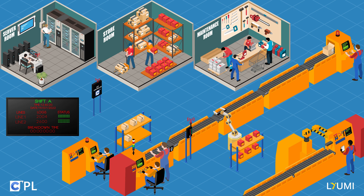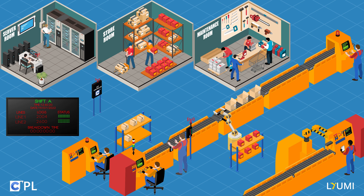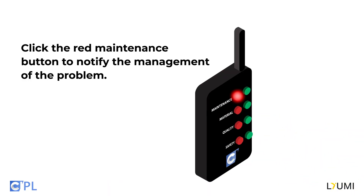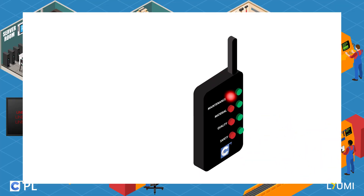Suddenly, a breakdown occurs on the conveyor belt, and all boxes get stacked behind each other, bringing production to a halt. One of the workers standing near the conveyor belt quickly clicks the red maintenance-labeled button on the Undawn station, notifying management of the issue.